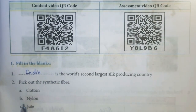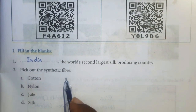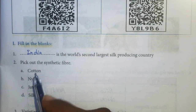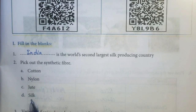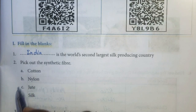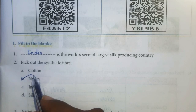Second one: pick out the synthetic fiber. Cotton, jute, and silk are all natural fibers. Nylon is a synthetic fiber.